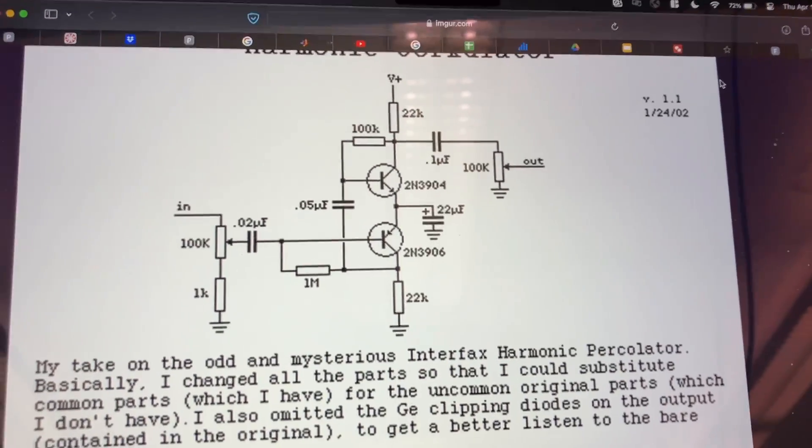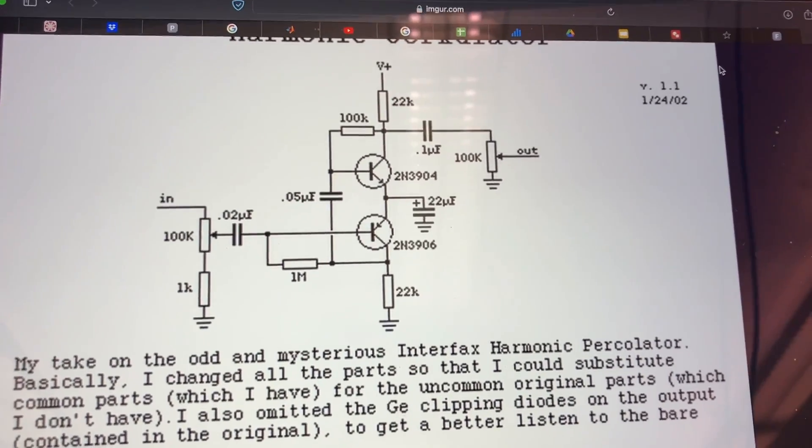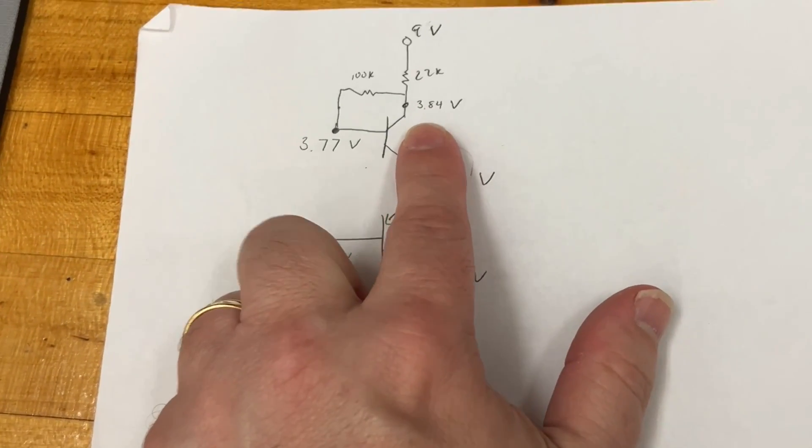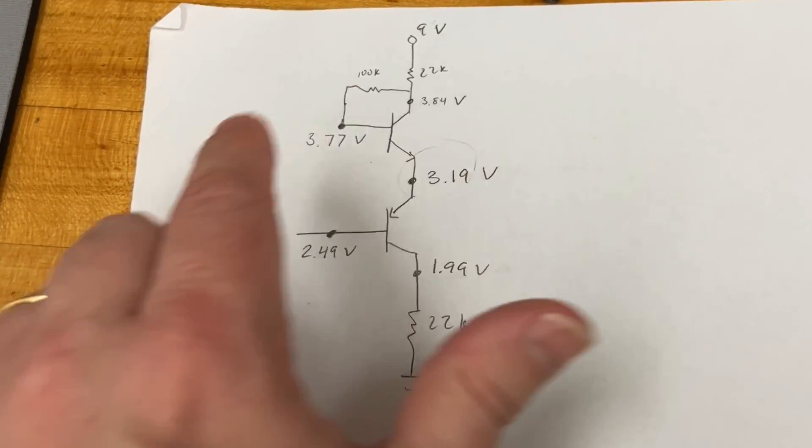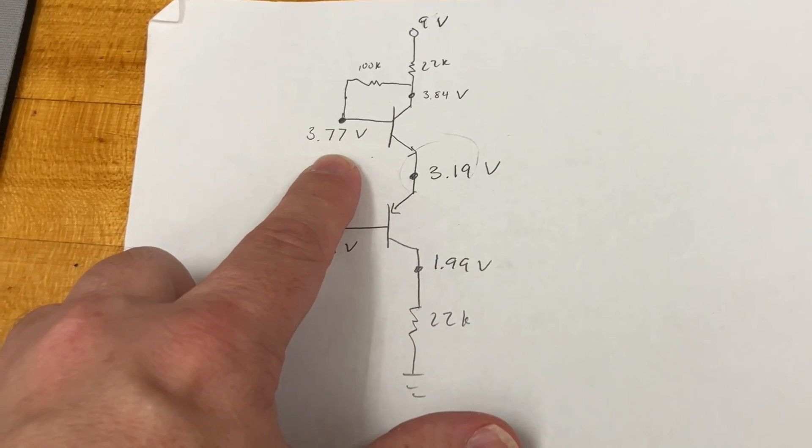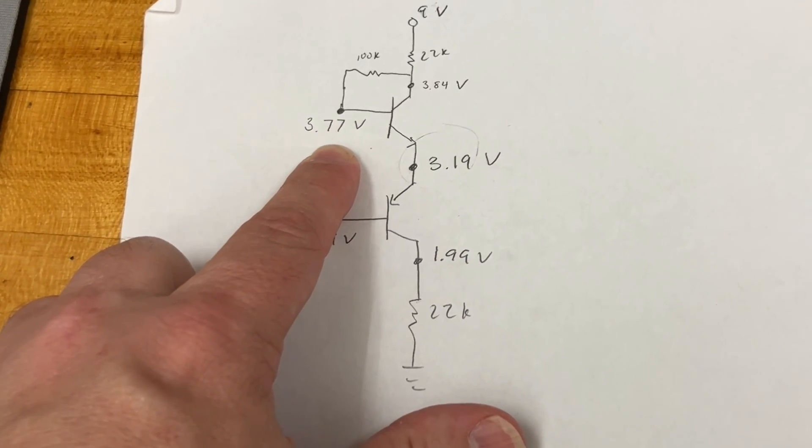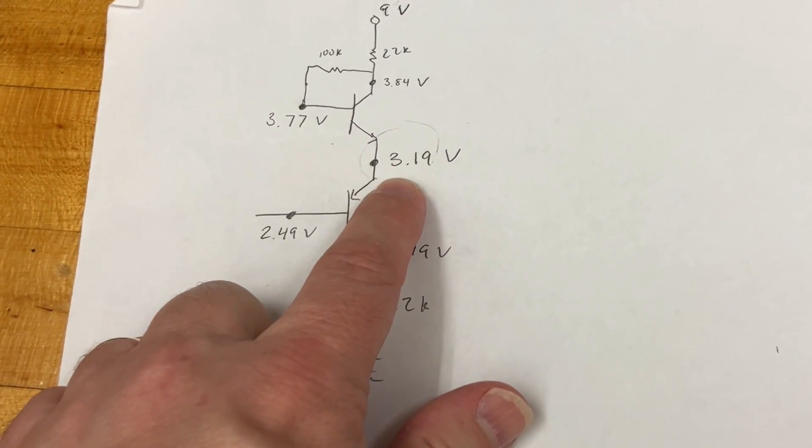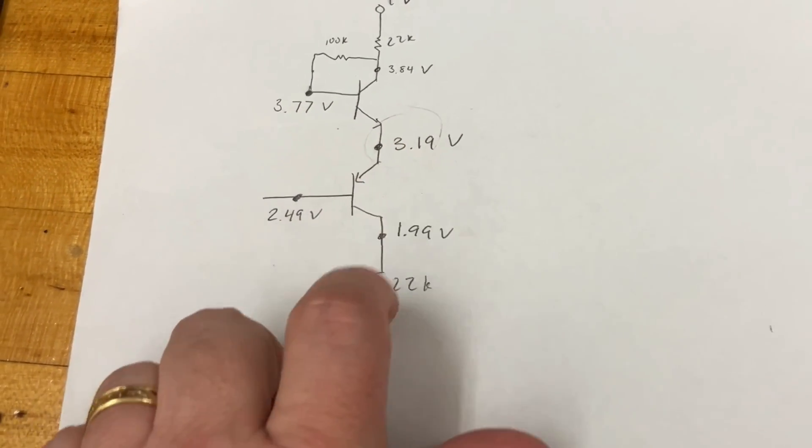And while we're at it, we measured some of the DC bias points. At the collector of the NPN, we read 3.8 volts. At the base, we read 3.77 volts. So if you want, you can figure out the current through this 100k. We read 3.19 volts at the junction of these emitters.